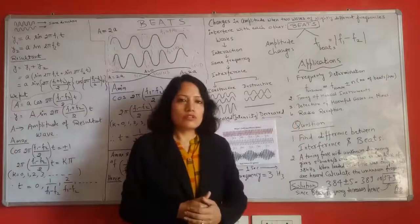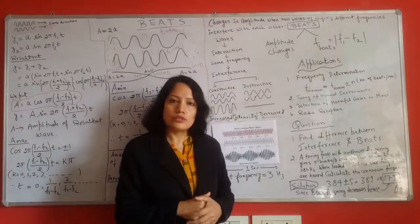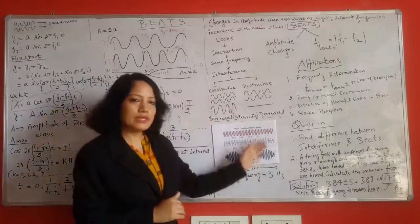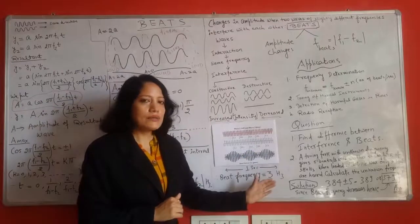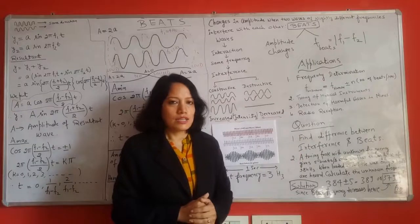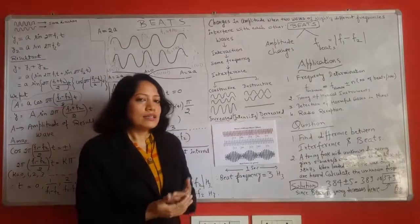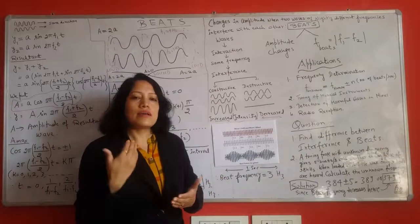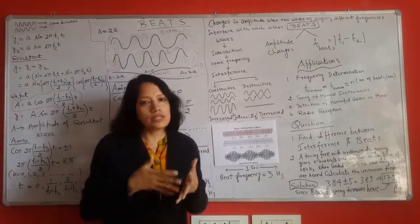Then in radio reception also beats are used. Now there are some questions that we may quickly take up. One question is find the difference between interference and beats. One difference is that in interference the waves may travel in opposite direction or in the same direction.